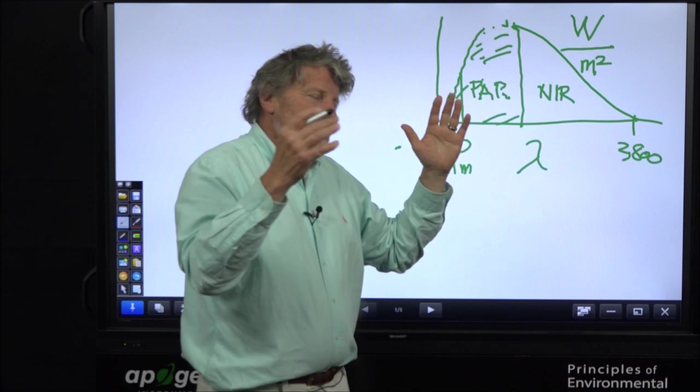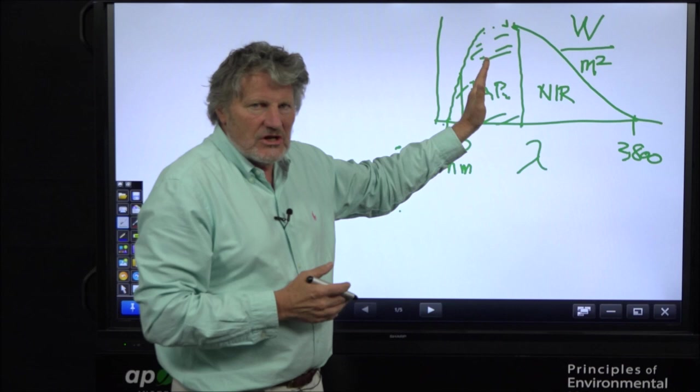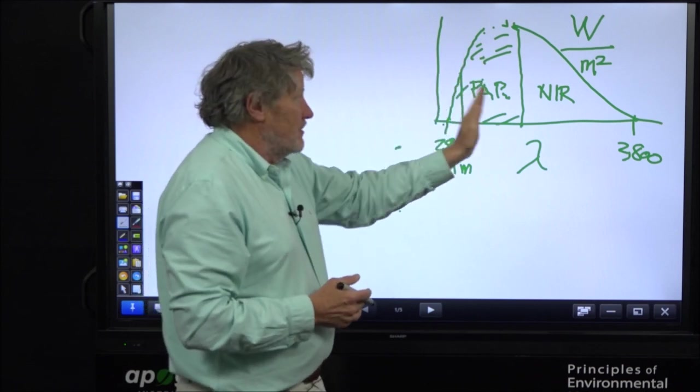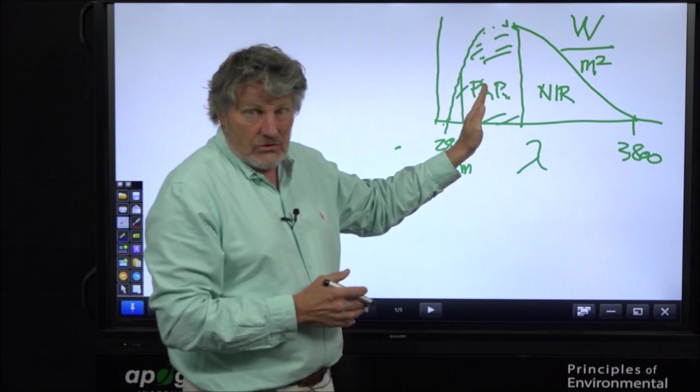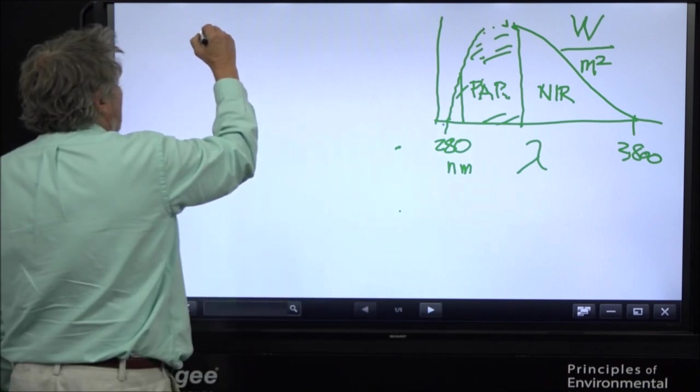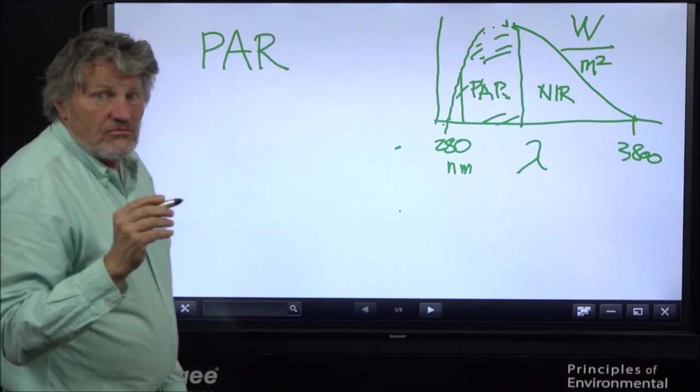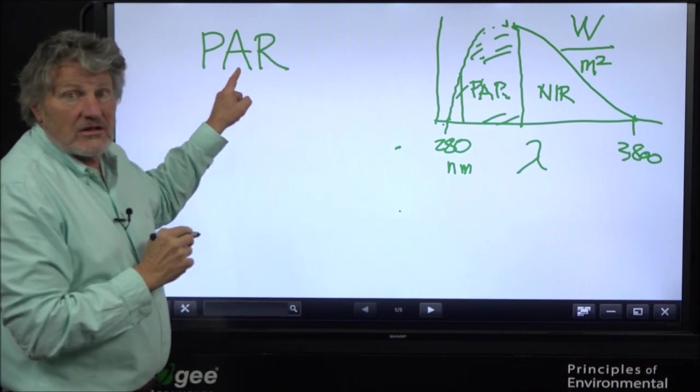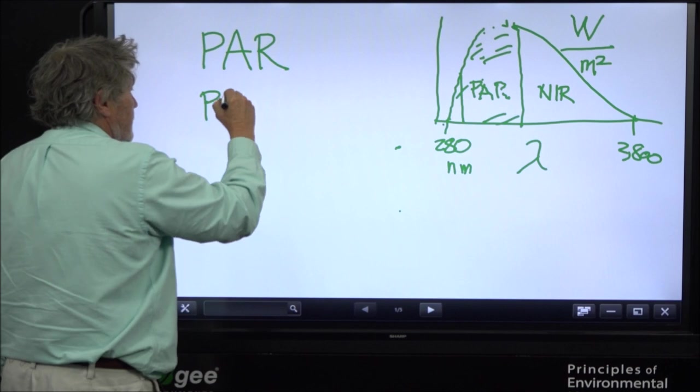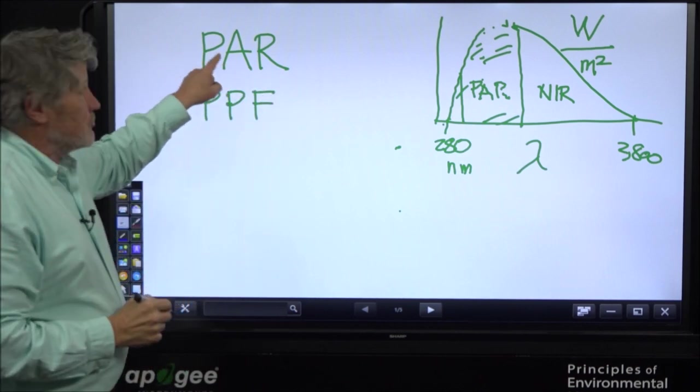Time passes. Keith McCree comes out in the early 1970s and says, no, it's not the energy, it's the number of photons that cause photosynthesis. We need to start counting photons, not energy. So we evolved from the term PAR to a term called PPF.